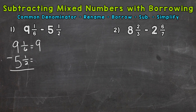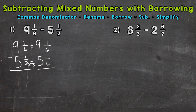So nine and how many-sixths minus five and how many-sixths? Well, one-sixth already has a denominator of six, so we don't need to rename. Now as far as one-half, we know that two times three is six, so we need to do the same thing to the top in order to keep this equivalent. One times three is three. So now we have renamed fractions with that common denominator of six.